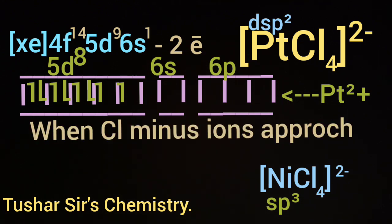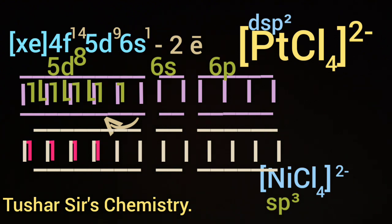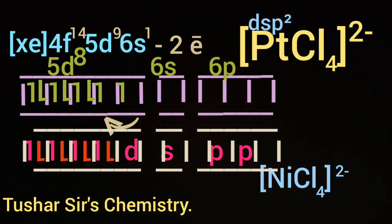When Cl⁻ approaches Pt²⁺ to form 4 coordinate bonds, the unpaired electrons present in 5d will get paired up, so one 5d will remain vacant. That 5d, one 6s, and two 6p orbitals of Pt²⁺ intermix to form 4 dsp² hybrid orbitals.